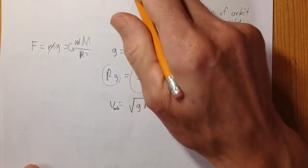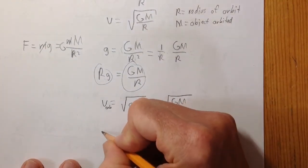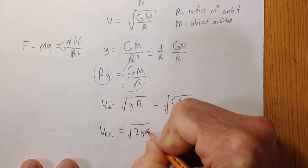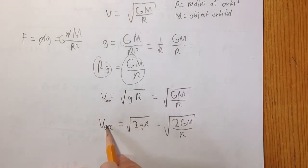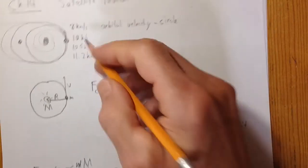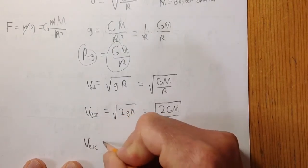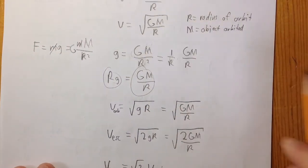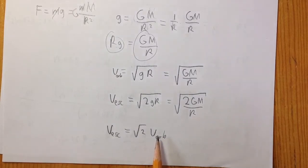Now it turns out if you want to escape the planet — you have to use calculus to do that because the force changes as you go further and further away, gravity gets weaker — the escape velocity is really nice: just put a 2 inside the square root. So it's the square root of 2gr, which is the square root of 2GM/r. The escape velocity is simply the square root of 2 times the orbital velocity. So if orbital velocity is 8, then 11.2 is the square root of 2 times 8. If you know one, you know the other. If you want to throw a ball up and it never falls down — 'what goes up must come down' is not really true — if you can throw it at the escape velocity, it won't come down.